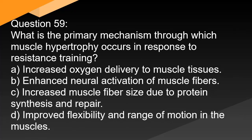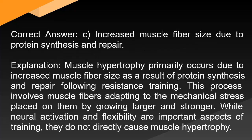Question 59: What is the primary mechanism through which muscle hypertrophy occurs in response to resistance training? A. Increased oxygen delivery to muscle tissues. B. Enhanced neural activation of muscle fibers. C. Increased muscle fiber size due to protein synthesis and repair. D. Improved flexibility and range of motion in the muscles. Correct answer: C. Muscle hypertrophy primarily occurs due to increased muscle fiber size as a result of protein synthesis and repair following resistance training. This process involves muscle fibers adapting to the mechanical stress placed on them by growing larger and stronger. While neural activation and flexibility are important aspects of training, they do not directly cause muscle hypertrophy.